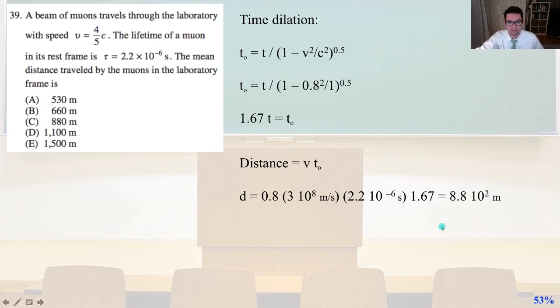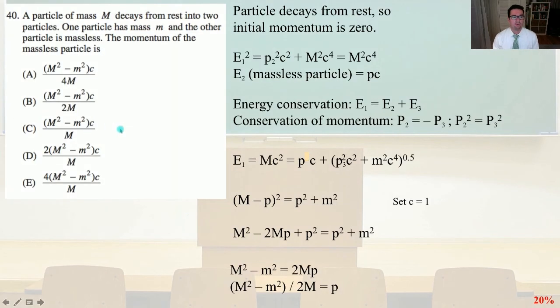And so that equals 880 meters. That is answer C. Number 40, a particle of mass m decays from rest into two particles. One particle has mass m, the other particle is massless. The momentum of the massless particle is, so the particle decays from rest, so the initial momentum is 0.